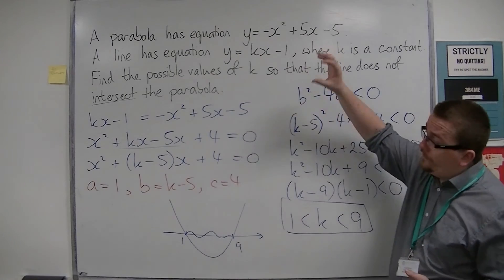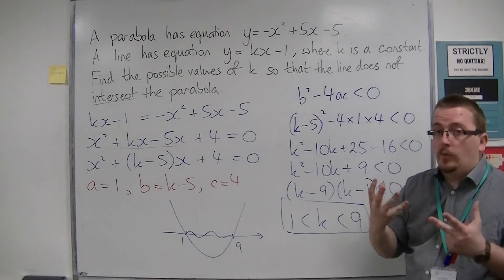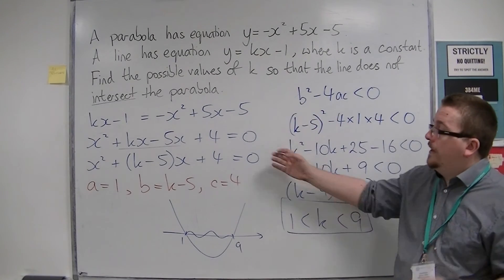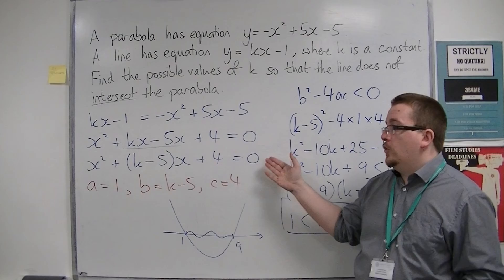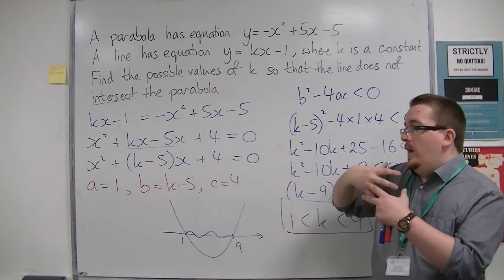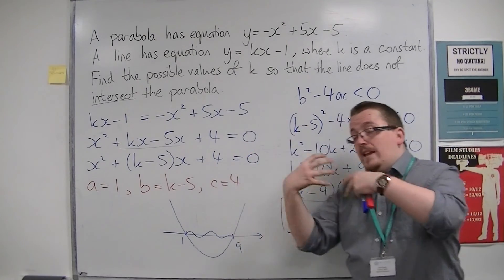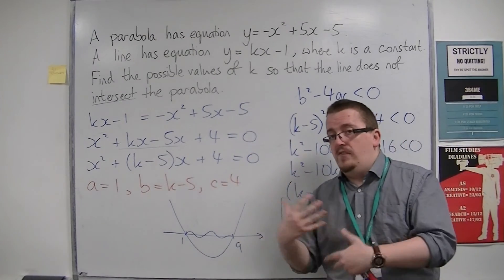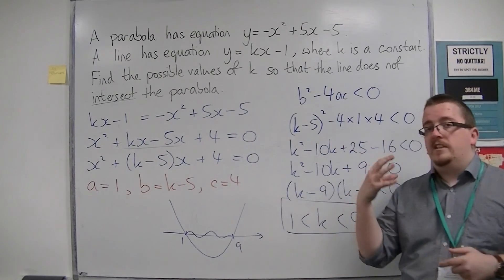So it involved putting one equation equal to the other and forming a single quadratic equation which we can solve using the previous methods of looking at the discriminant.